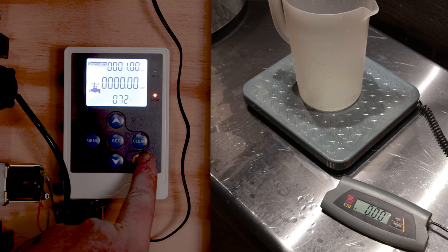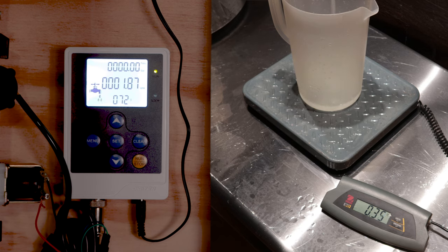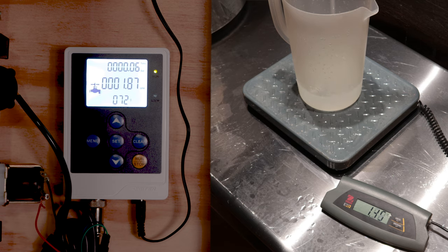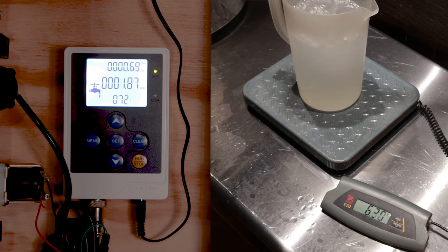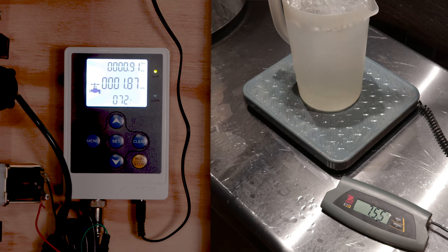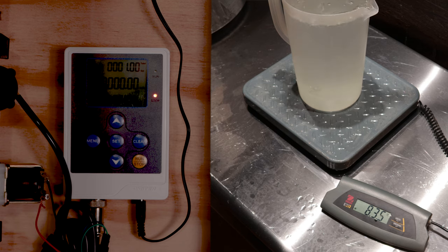All right, here we go. We're going to hit the run button and it should open up this solenoid and allow everything to start flowing. I'm going to go out there and take a look at where we are with our measurement and let's see how we wind up. And water weighs 8.35 pounds per gallon at room temperature. We are 8.35 pounds. So as you saw, this thing is very, very accurate. I'm excited to use it on a brew day.